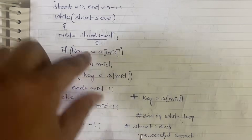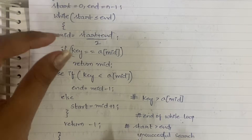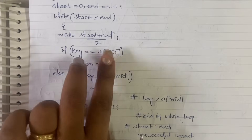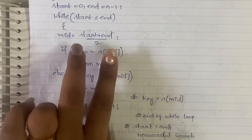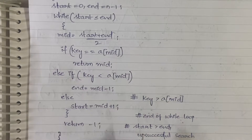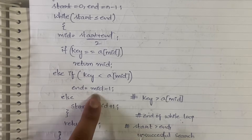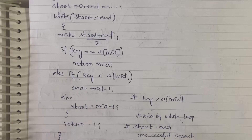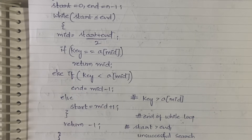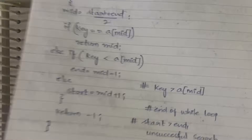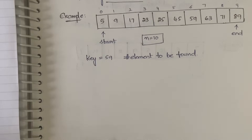Inside the while loop, first you compute mid as start plus end divided by 2. Then you check: if the mid value is equal to key, you directly return mid. If it is not equal, it could be either less than or greater than key. I'll explain what to do in each case with a numerical example — that will make the algorithm much clearer.